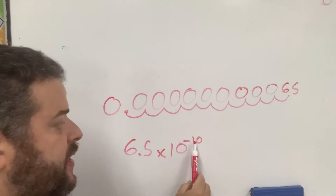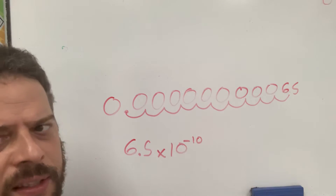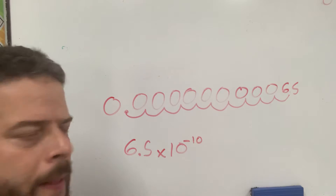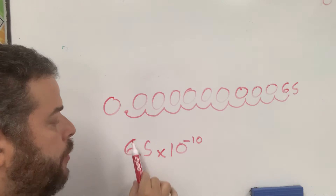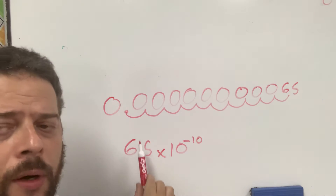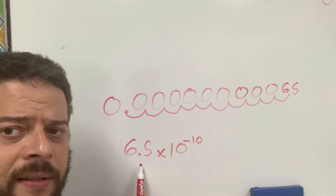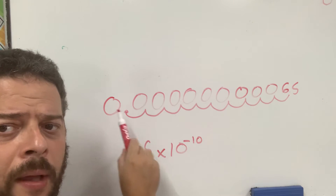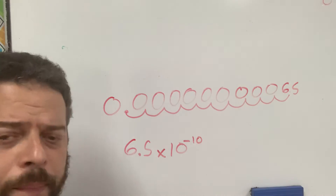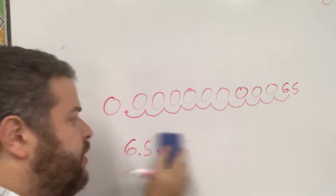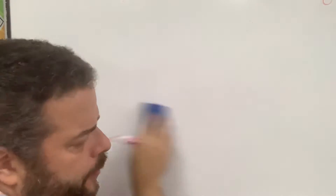Again, this just happened to be negative 10 because I moved 10 spots. So you find the number that is greater than 1 and smaller than 10, place the decimal point, then move the decimal point however many spaces you need. Let's go over another example.